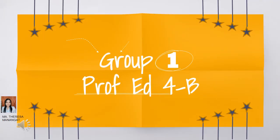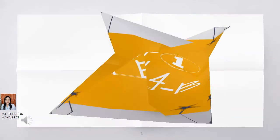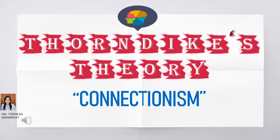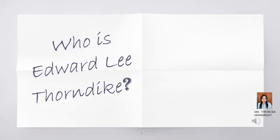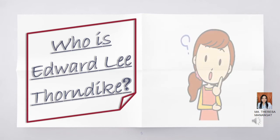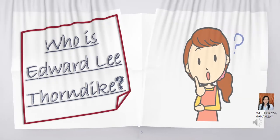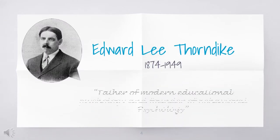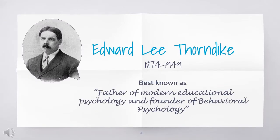Hello everyone, this is the report of group 1. The topic that we will be discussing is all about Thorndike's theory of connectionism. Now before we discuss his theory, let us first know who is Edward Lee Thorndike. One of the main influences of behaviorist psychology was Edward Lee Thorndike. He was best known as the father of modern educational psychology and founder of behavioral psychology.